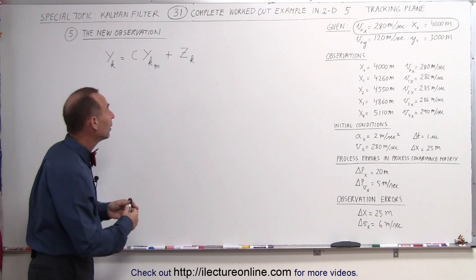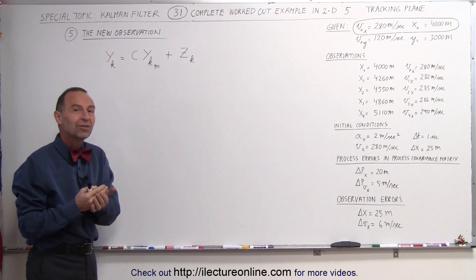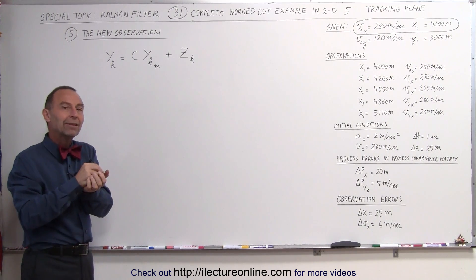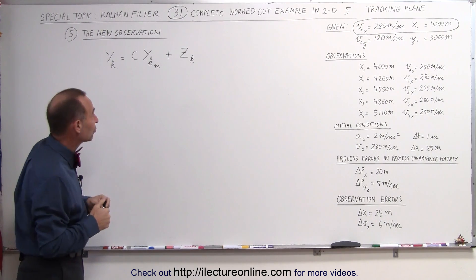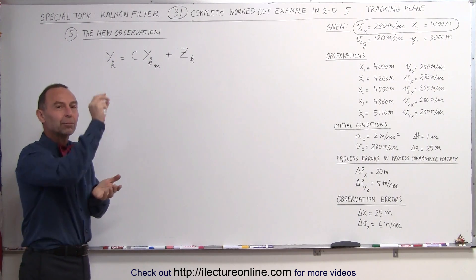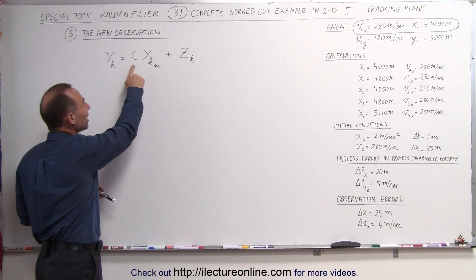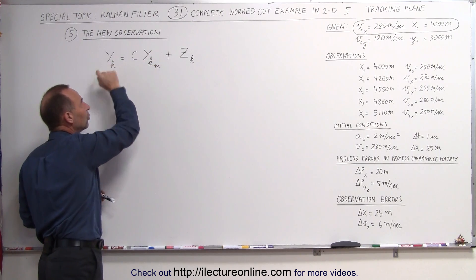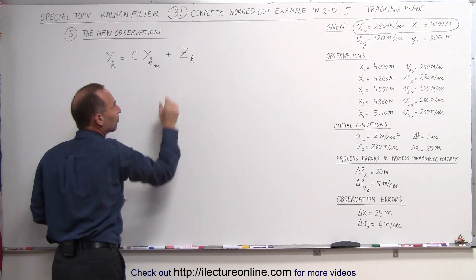How do we read that in? We want to make sure that the Y sub K matrix — which represents the observed state of the plane — has the same format as the state matrix, the X matrix. In the case of a two-dimensional example, it was a two-by-one matrix with position and velocity, which means we want position and velocity here. The C matrix allows us to transform the observed matrix into the state that we need it to be, and we also need to be able to add the error in the observations.